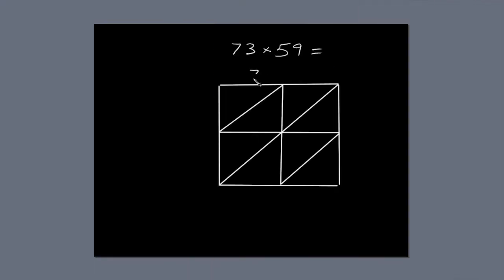Next, write the first number, 73, along the top of the box, so each digit lines up with a column. Write 59 down the right-hand side of the box, so each digit lines up with a row.